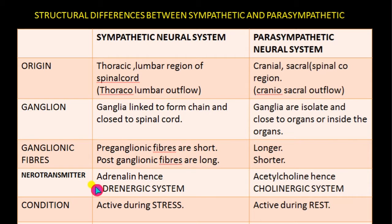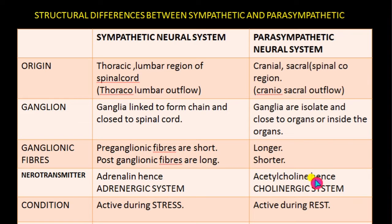Regarding neurotransmitters, the post-ganglionic neurons of the sympathetic system release adrenaline, hence the system is known as the adrenergic system. In the parasympathetic neural system, the post-ganglionic neurons release acetylcholine, that's why it is known as the cholinergic system.